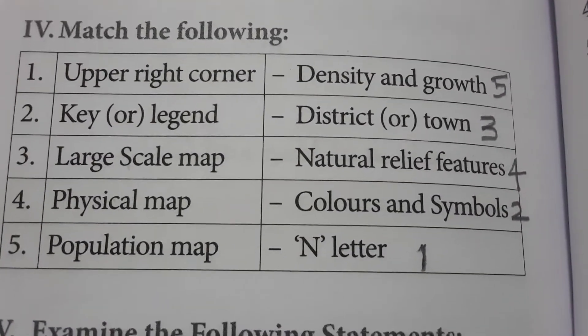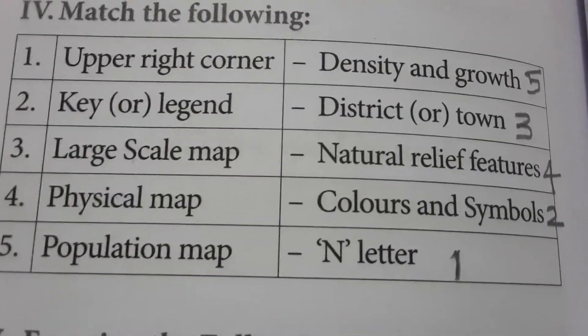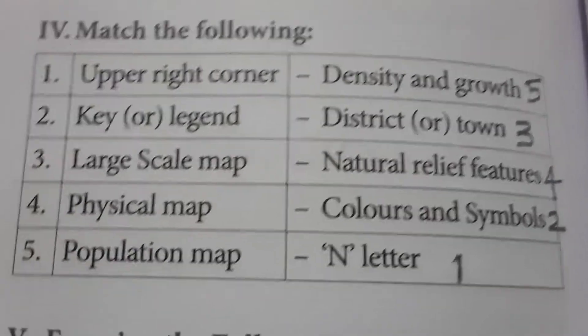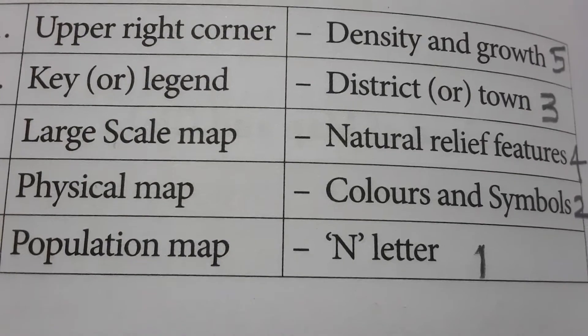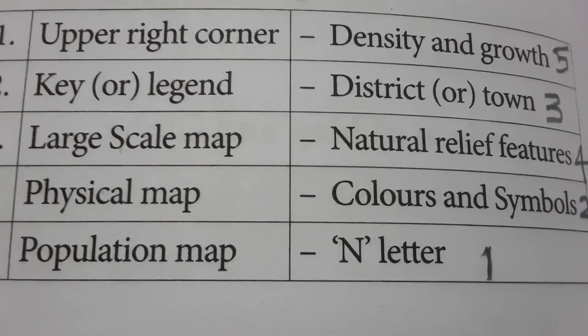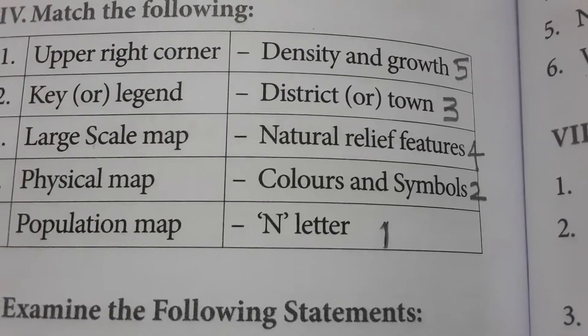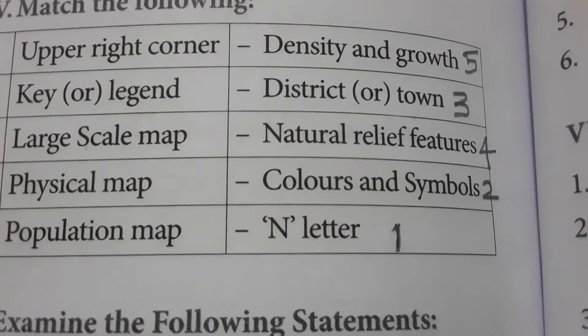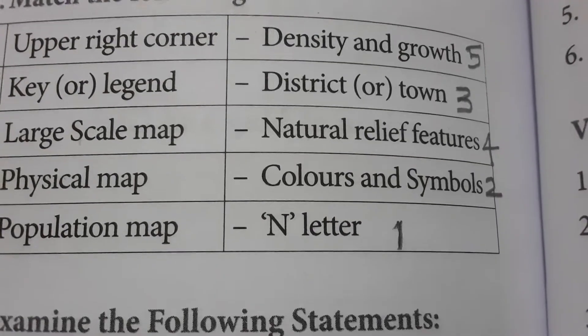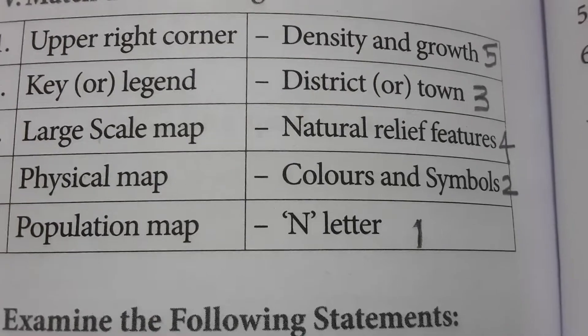Match the following: Upper right corner has the capital N letter, which stands for north direction in every map. Key or legend means colors and symbols. Large scale maps are known as districts and towns. Physical maps show natural relief features. Population map shows density and growth.